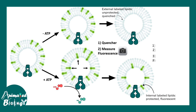The fluctuation in fluorescence intensity reports on the activity of this particular ABC transporter. Eventually, a detergent is provided to disrupt all the vesicles, and then a quencher is added — whatever residual fluorescence is present in both conditions would be gone. One can visualize this with the help of a graph.